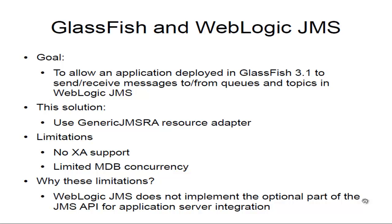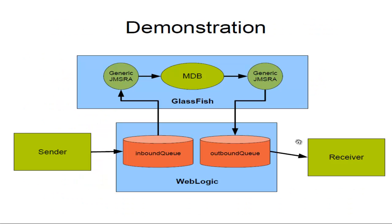At the moment there are a number of limitations in that there's no XA support and limited MDB concurrency. What I'm going to show you is an MDB application running in GlassFish. It will receive messages from a queue in WebLogic, and when the MDB receives the message it's going to send a message to another queue also in WebLogic. So as you can see in the diagram, we've basically got an application which takes messages from one queue and sends them to another.